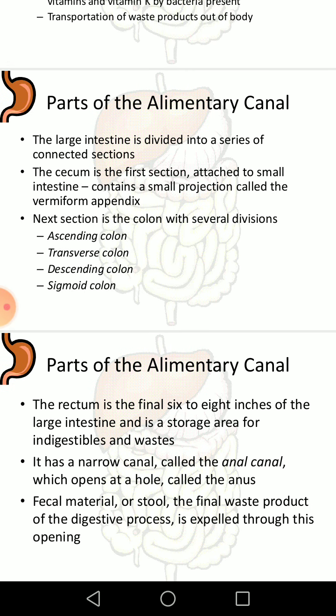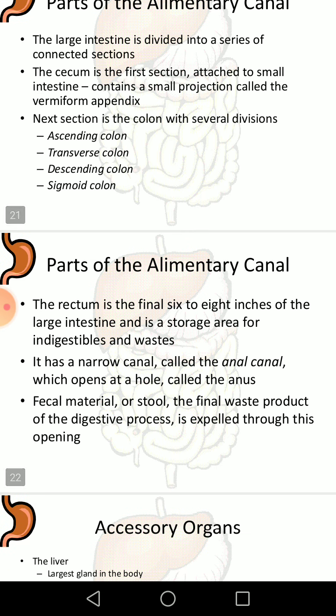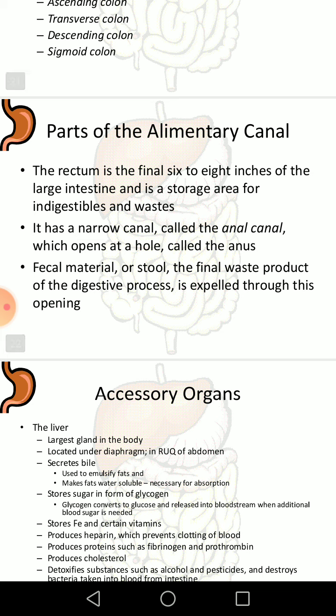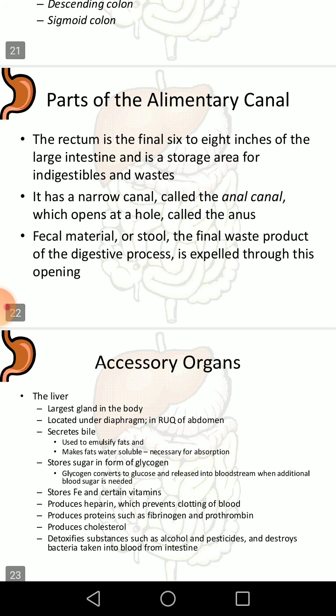The large intestine is divided into the cecum, colon, and rectum. The cecum is the first section. The colon has several divisions: ascending colon, transverse colon, descending colon, and sigmoid colon. The rectum is the final 6 to 8 inches of the large intestine and is a storage area for indigestible waste. A narrow canal called the anal canal opens at a hole called the anus, through which waste leaves the body.